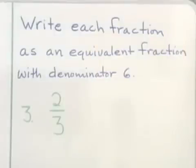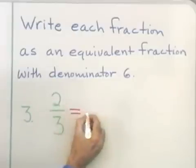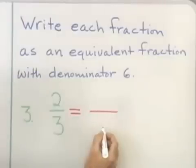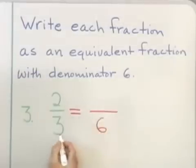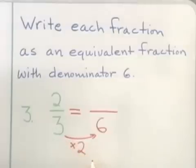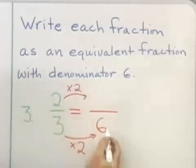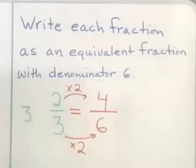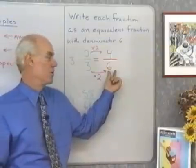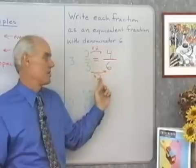Write each fraction as an equivalent fraction with denominator 6. Here I have the fraction 2/3 and I want to rewrite it as a fraction with a denominator of 6. In order to go from 3 to 6, I need to multiply by 2. So multiplying the denominator by 2 will produce a denominator of 6. If I do that to the denominator, I have to do the exact same thing to the numerator. So 2/3 is equivalent to the fraction 4/6, produced by multiplying the numerator and denominator by 2.